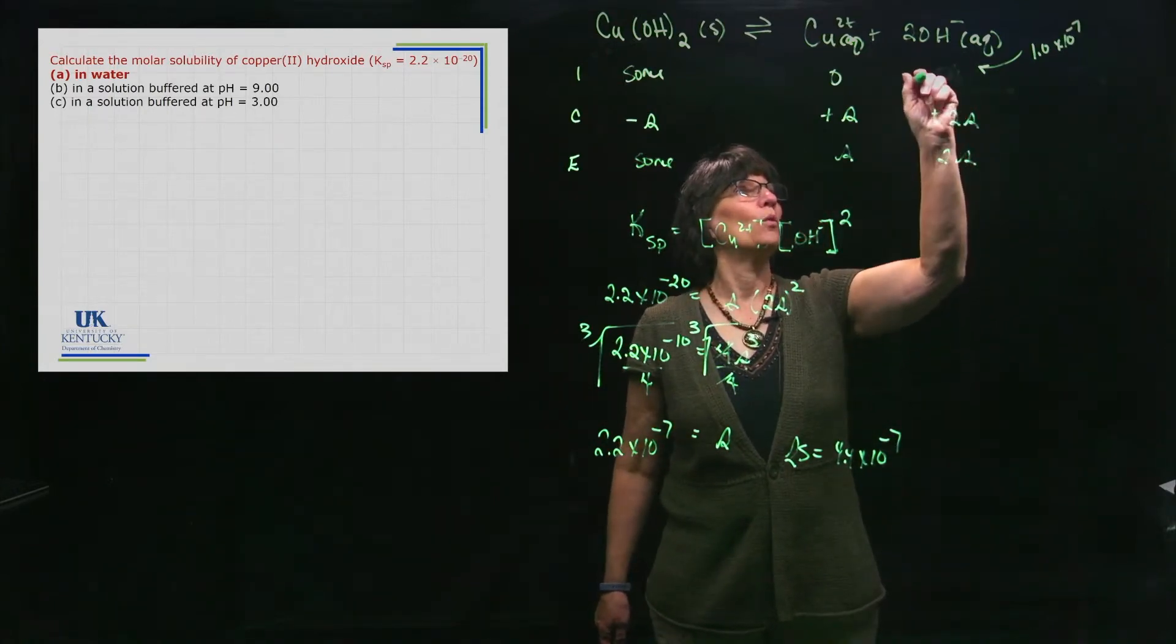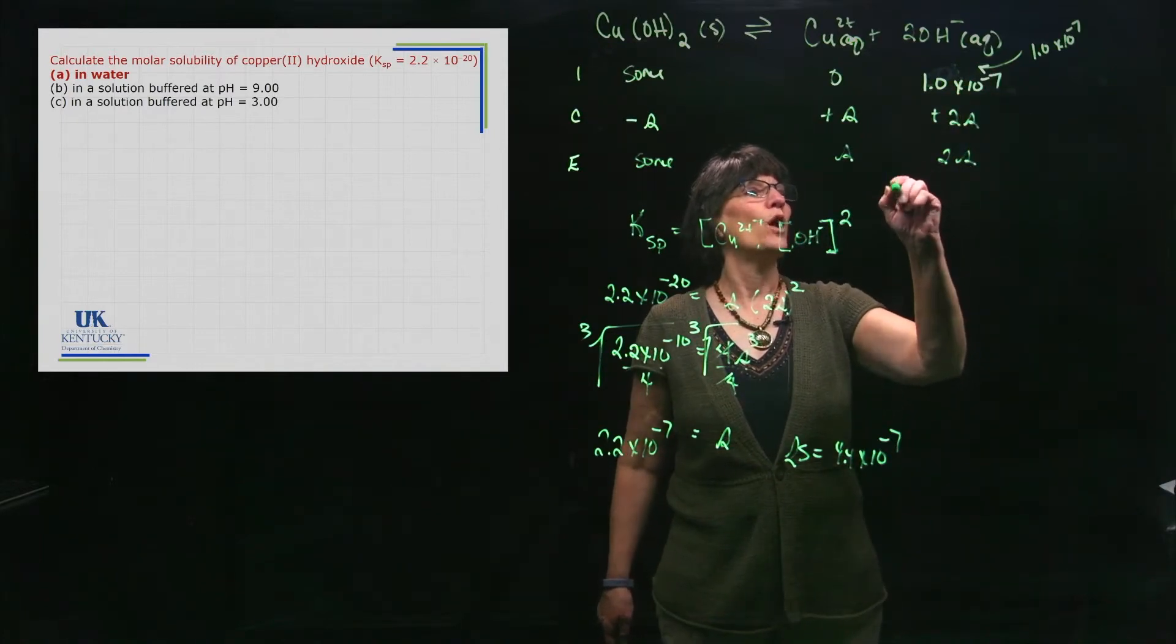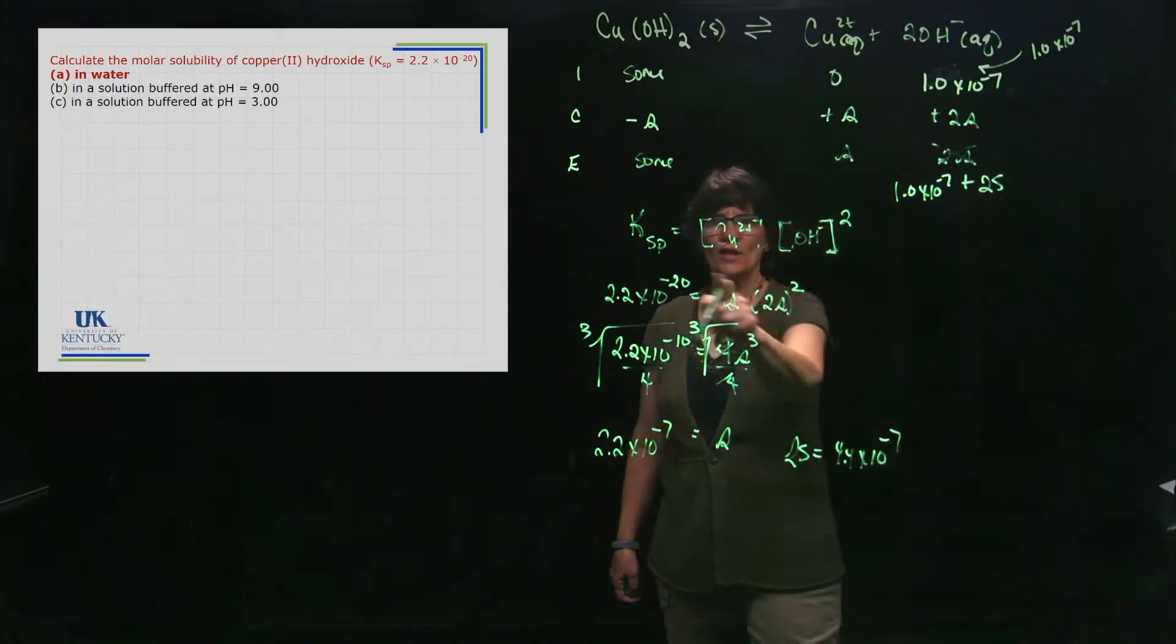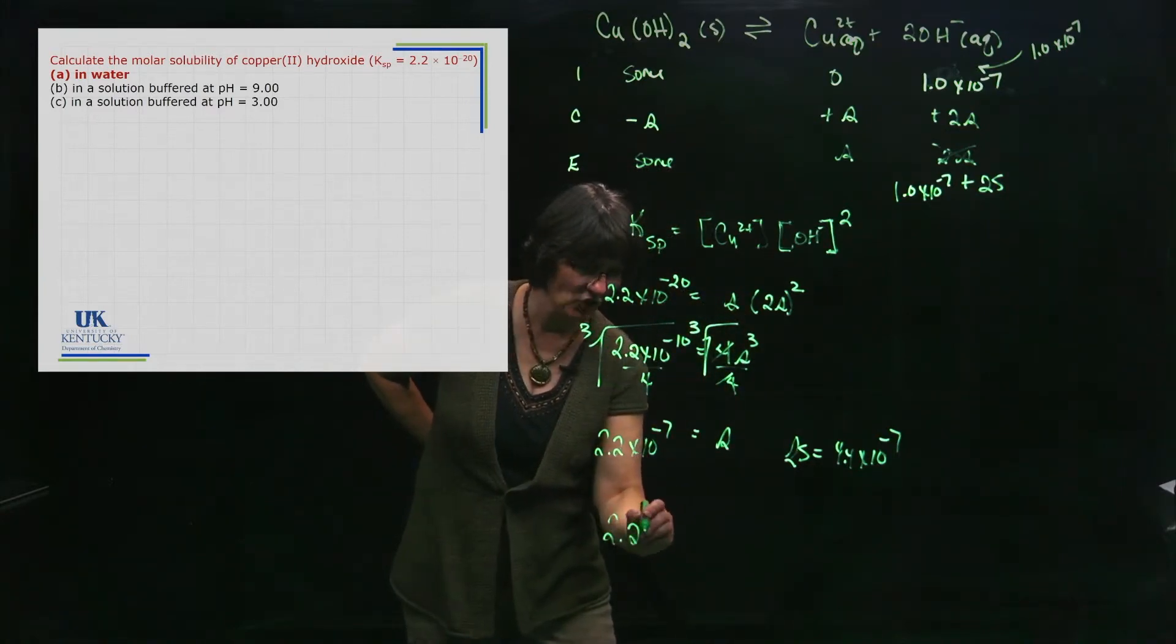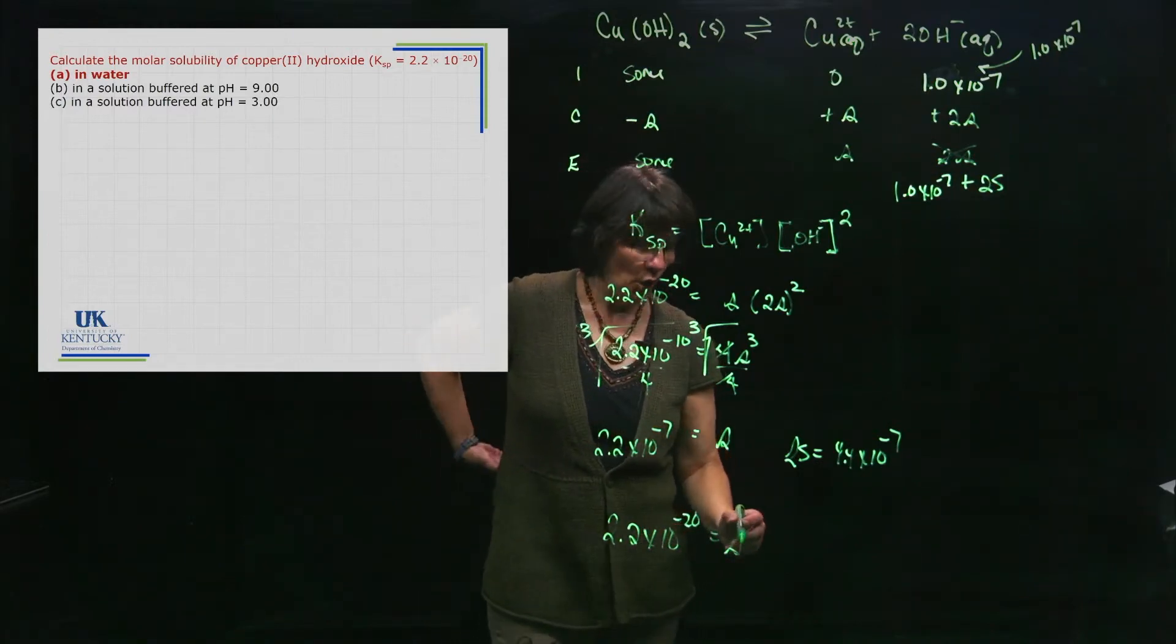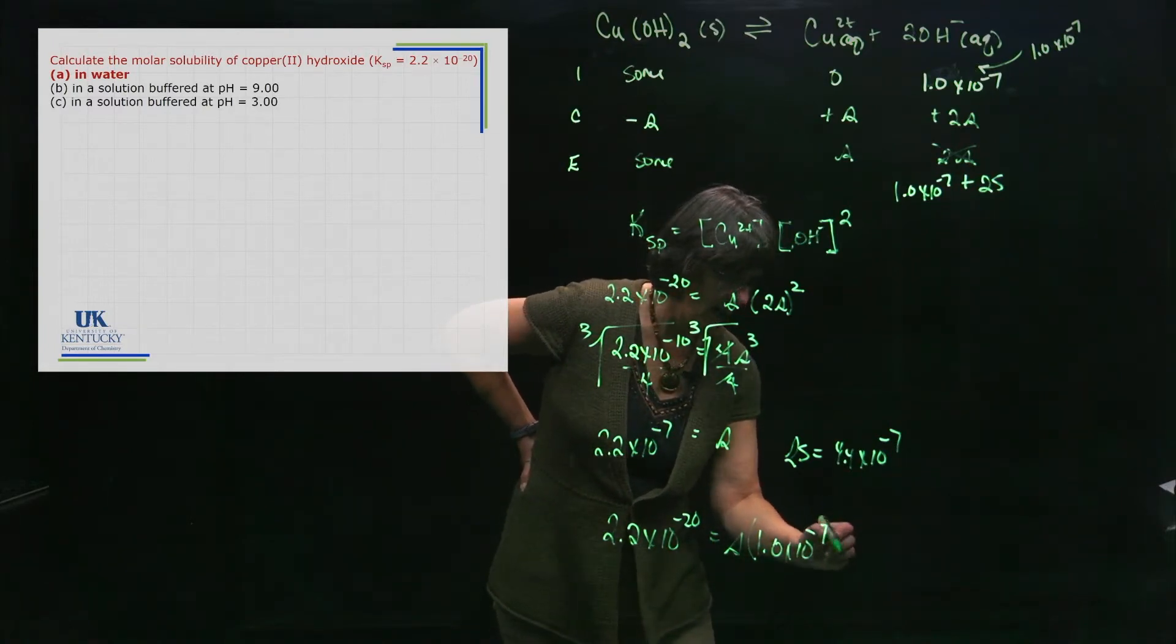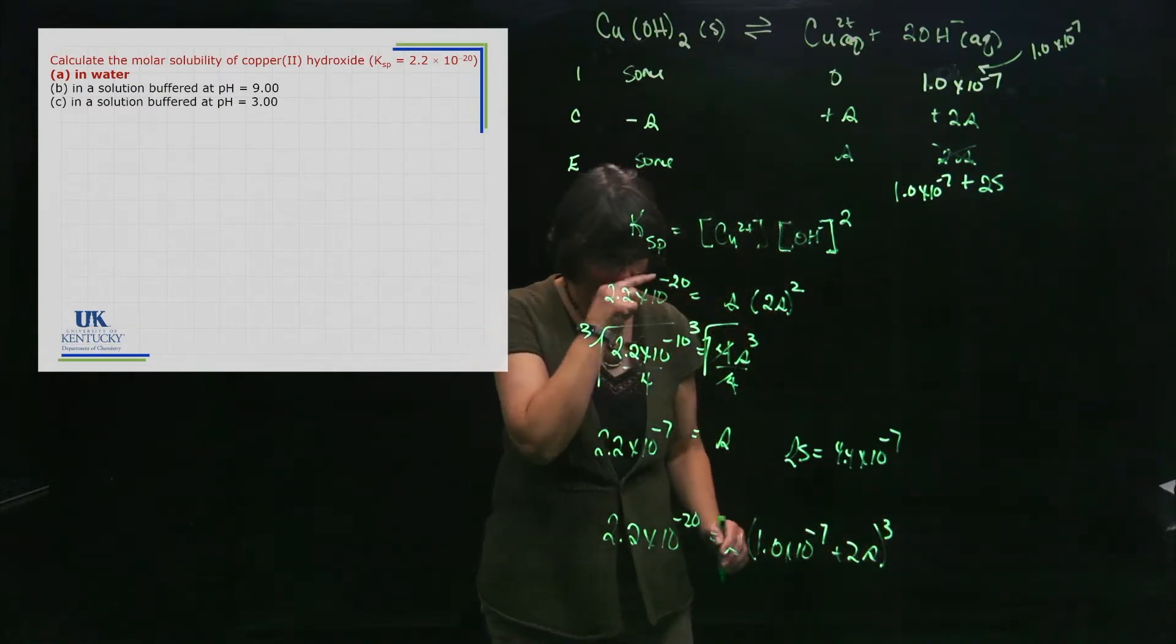So let's get rid of that assumption and put a 1 times 10 to the minus 7 in here. So I'm going to put 1.0 times 10 to the minus 7, and this becomes 1.0 times 10 to the minus 7 plus 2s instead of just 2s. So then I come down here and I say, alright, well I could make that assumption now. Let's see what we have. 2.2 times 10 to the minus 20 is equal to s, that's good. We have 1.0 times 10 to the minus 7 plus 2s, and that is squared.